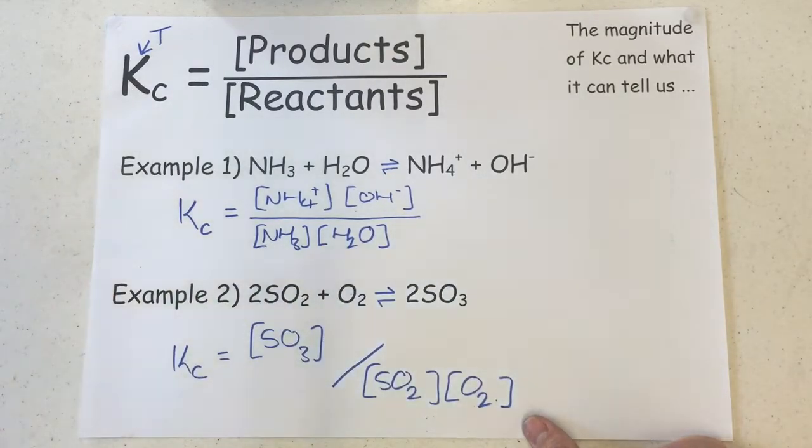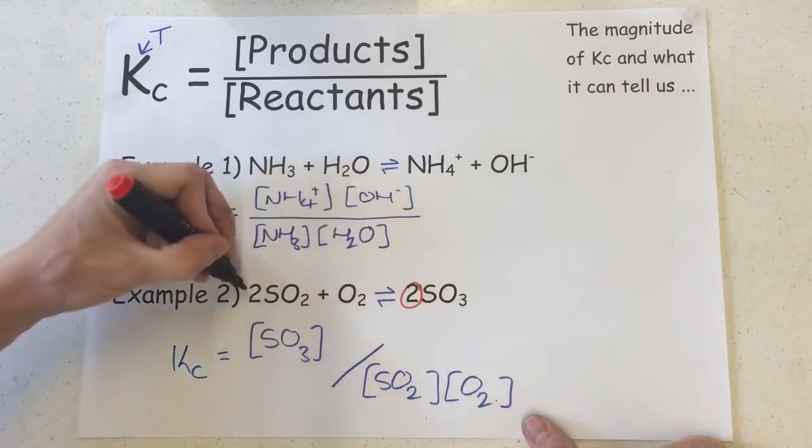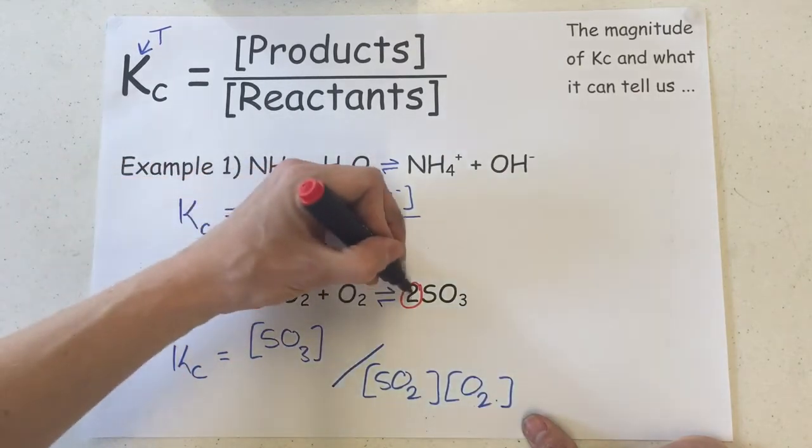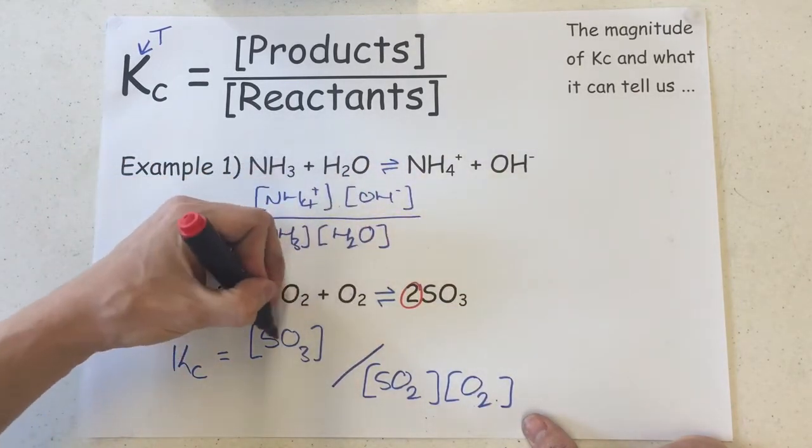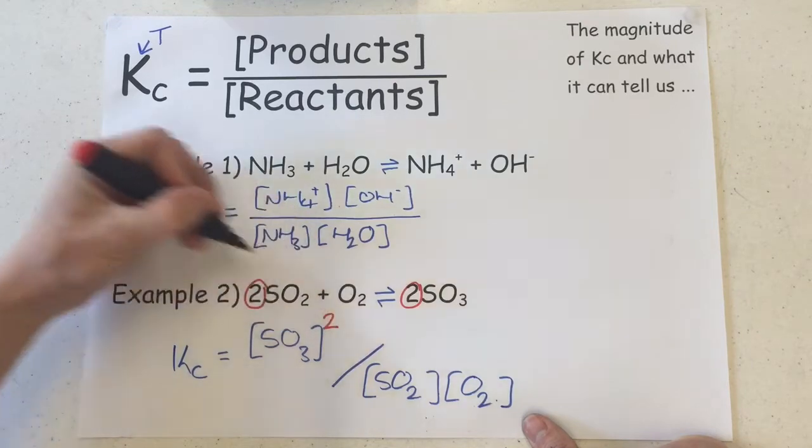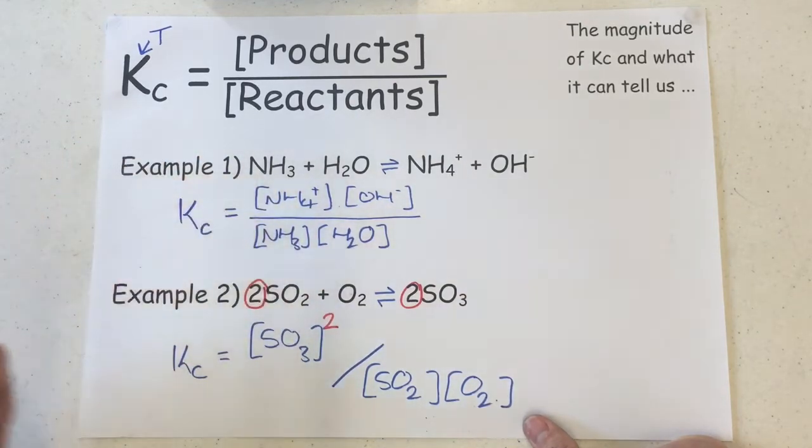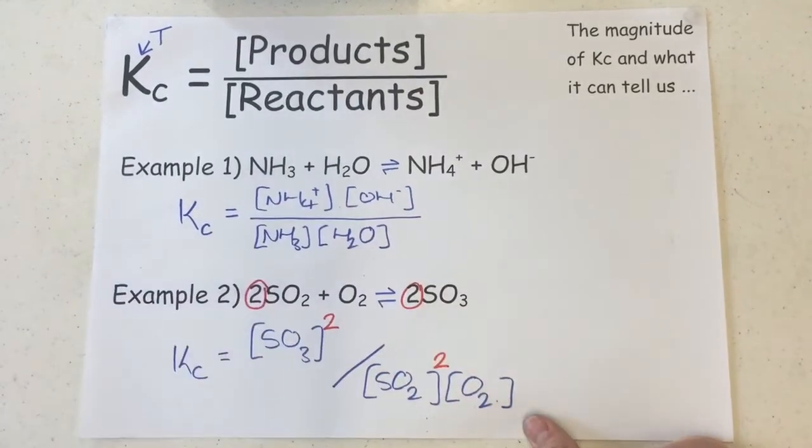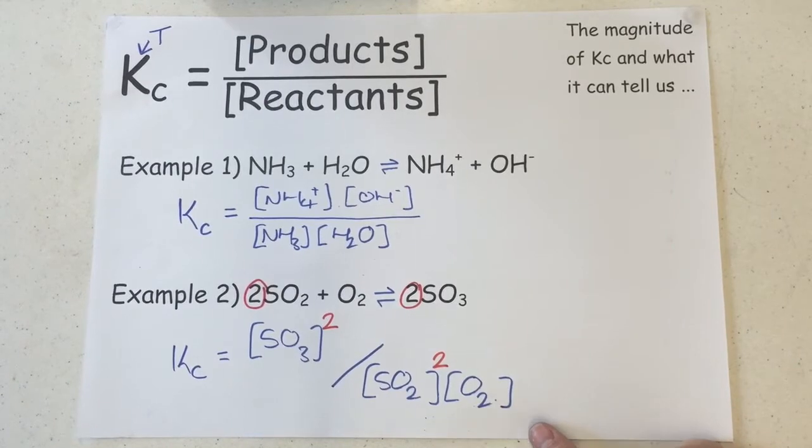Now, what we're missing here is the fact that we've now got coefficients in our equation. The 2 here in front of the SO3 means that the SO3 goes to the power of 2. So the concentration value we are given by the question needs to be squared inside this expression. And the 2 here in front of the SO2 means that the SO2 value also gets squared. The value we're given by the question has not been squared yet and would need to have that calculation done to it in order to be used in the KC expression should we be asked to calculate a value of KC.